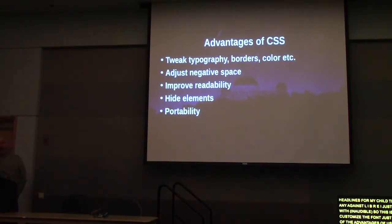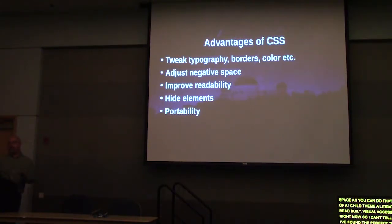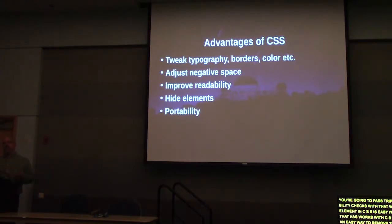Some advantages of using CSS in a child theme: you can tweak typography, borders, and color. You can adjust negative space — if a theme has a lot of white space between paragraphs and you want to tighten that up, you can do that with just CSS. You can also improve readability. Visual accessibility is a big item right now, and I can't tell you how many times I've found a perfect theme except the designer put gray on a gray background. Hiding elements in CSS is also easy — a quick way to remove footer credits. And there's portability: it's all in one file, so moving from local to live server preserves all your changes.